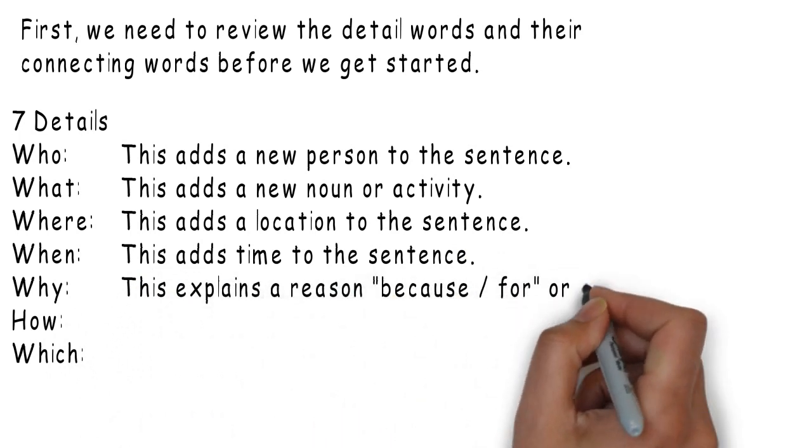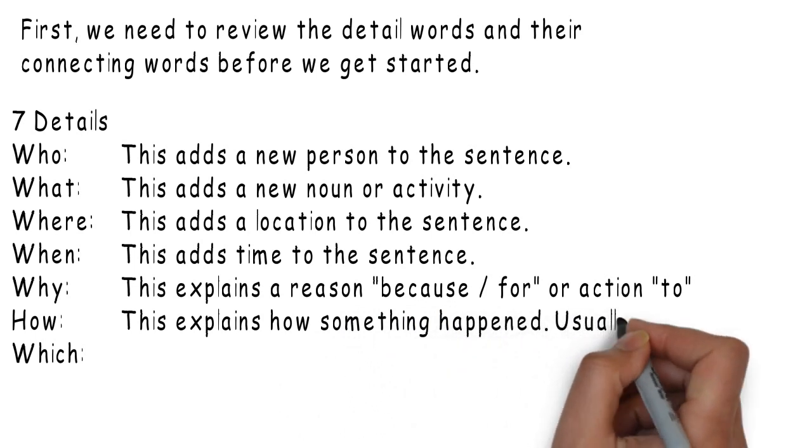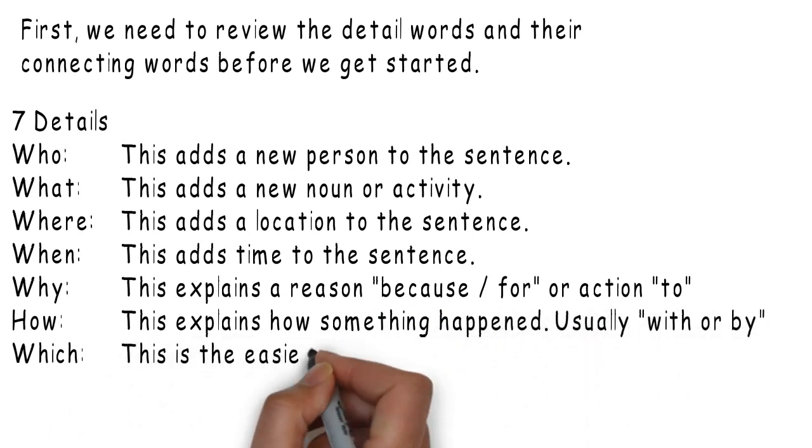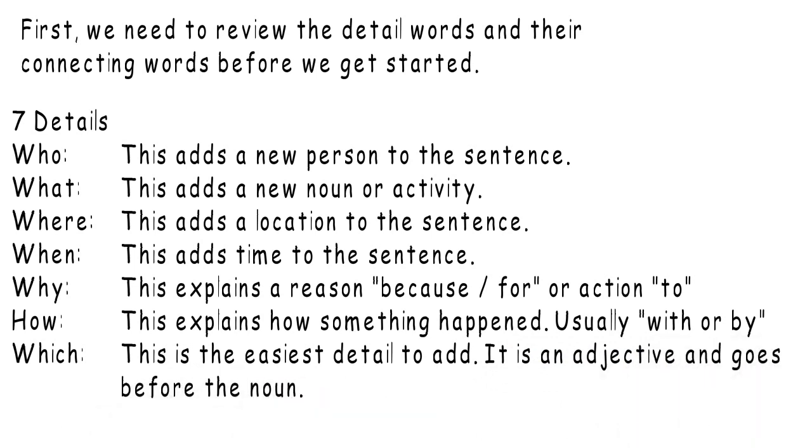When: This adds time to the sentence. Why: This explains a reason, because or for, or an action, to. How: This explains how something happened, usually with or by. Which: This is the easiest detail to add. It is an adjective and goes before the noun.